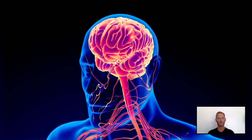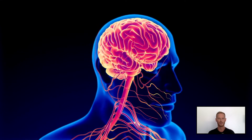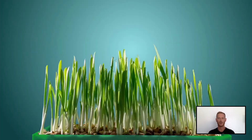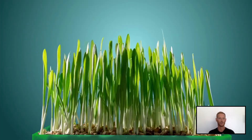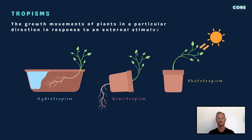So far in chapter 14 we've learned about the ways in which mammals coordinate responses to changes in their environment. Like animals, plants must also respond to stimuli in order to survive. The responses of plants to stimuli like light, water, and gravity are collectively known as tropic responses or tropisms. Tropisms are directional, meaning the plant either grows towards or away from a stimulus.